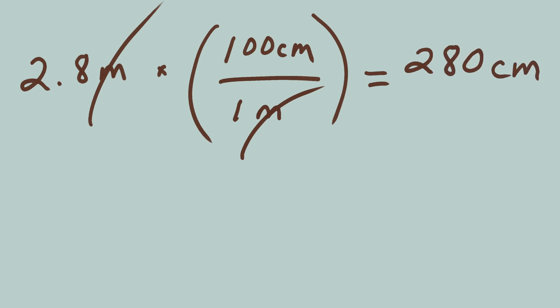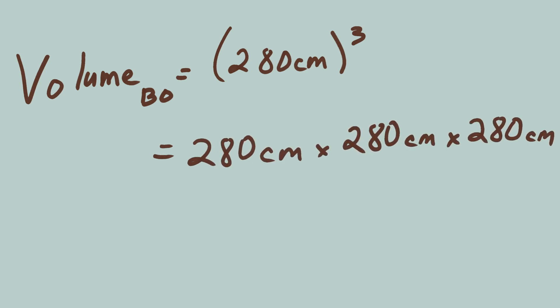Now, let's find out the volume of Bertram's office in cubic centimeters, the same units as Ernie's little cubes. The volume of Bertram's office is the quantity 280 centimeters cubed, or 280 times 280 times 280 equals 21,952,000 centimeters cubed.